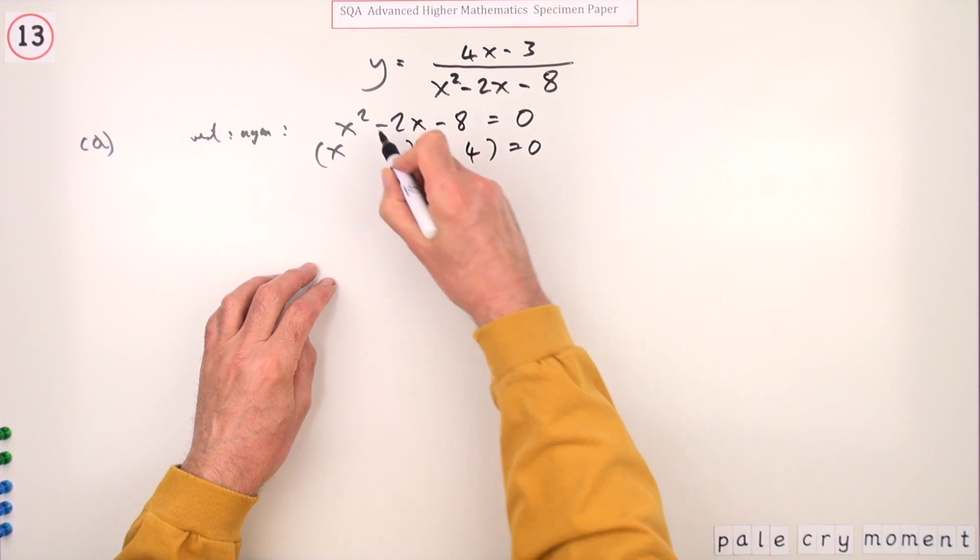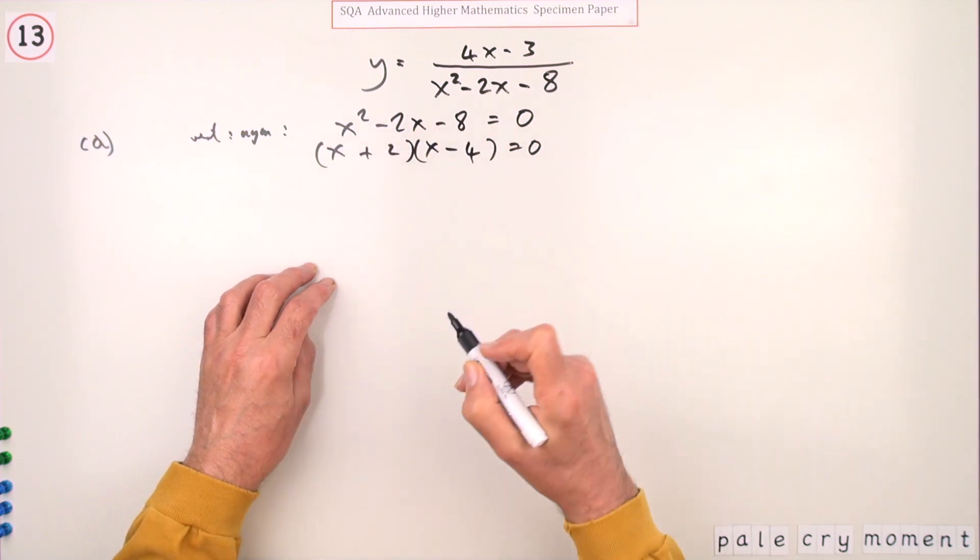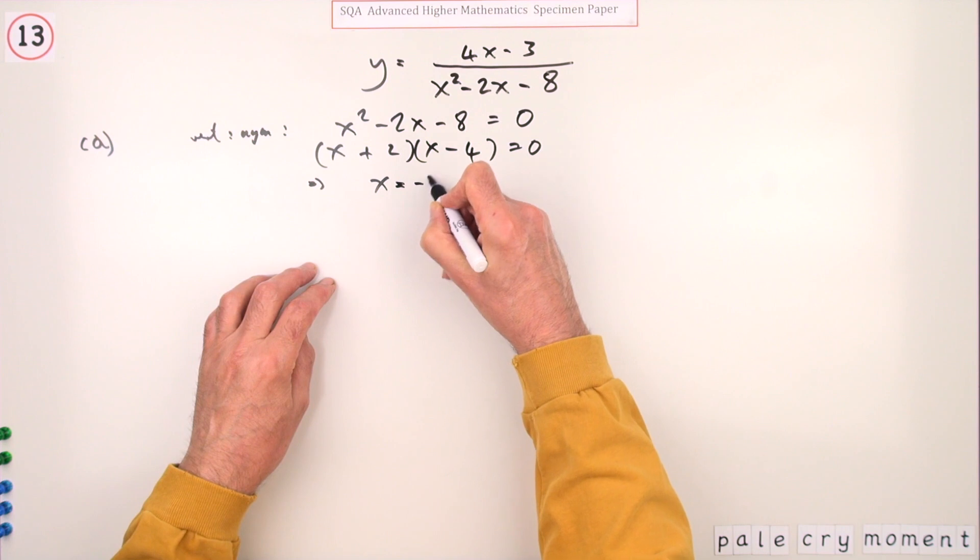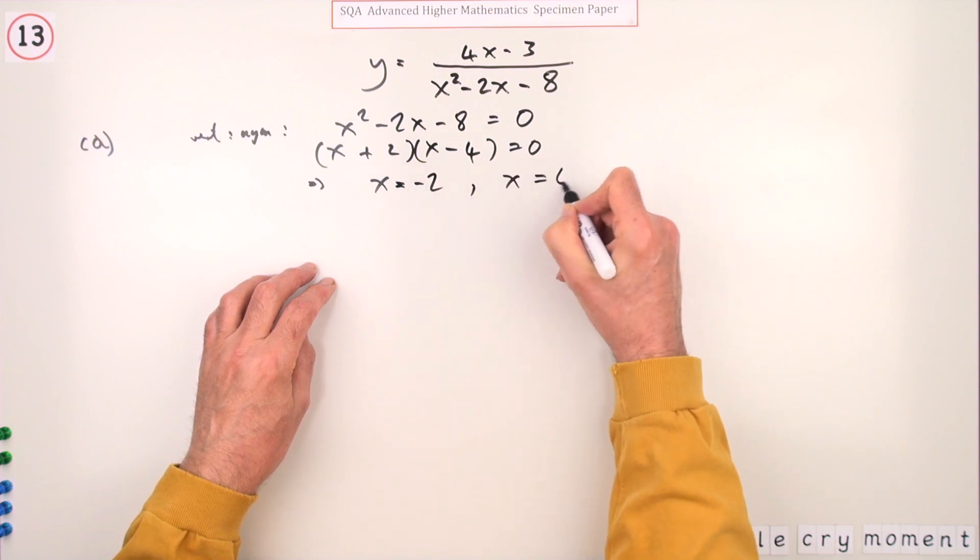So you're getting two answers from this: x is negative 2, x is 4.